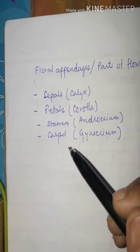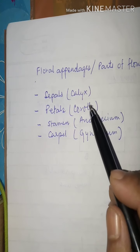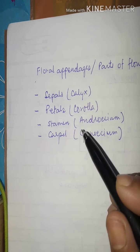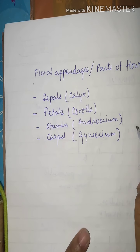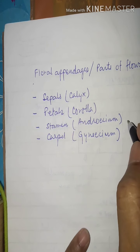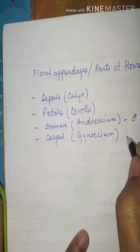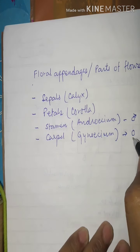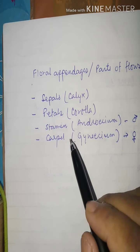We have completed the discussion about the non-essential parts — sepals and petals. Today we will discuss the two main reproductive parts: stamens and carpels. Stamens are collectively known as androecium and are the male part, whereas carpels are the female part.